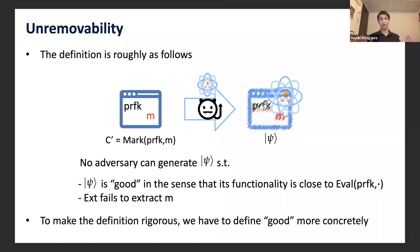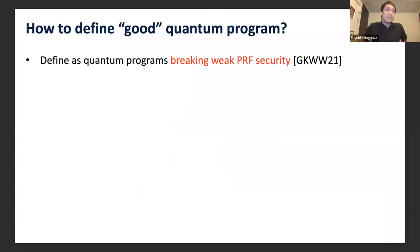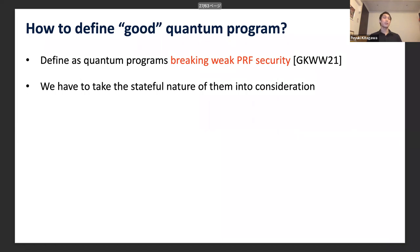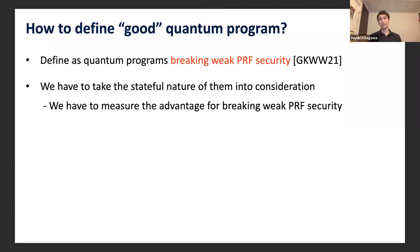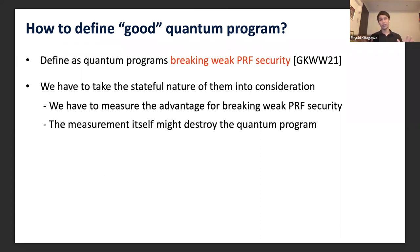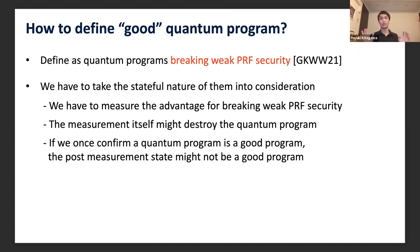To make this definition rigorous, we need to define the notion of a 'good quantum program' more concretely. We define a good quantum program as one that breaks weak PRF security, as done by Goyal et al. However, we must take the stateful nature of quantum programs into consideration. The problem is: to check whether a quantum program is good, we must measure its advantage for breaking weak PRF security, but such a measurement might itself destroy the quantum program. So if we once confirm a program is good, the post-measurement state might no longer be good.